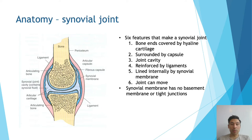The synovial membrane has no basement membrane or tight junctions, which explains how the joint and cartilage that has no blood supply gets its nutrients, as well as how bacteria inoculates these joints.